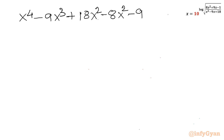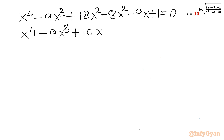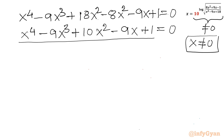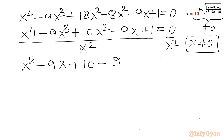Rearranging gives x⁴ − 9x³ + 10x² − 9x + 1 = 0. Since the right-hand side is an exponential function, x cannot be zero, so we can divide both sides by x². This gives x² − 9x + 10 − 9/x + 1/x² = 0.